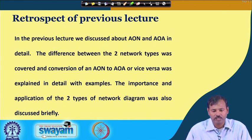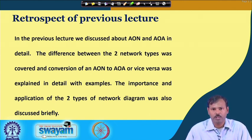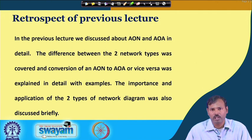In the last class we discussed how dummy jobs are required in the activity-on-arrow diagram to help identify which are the predecessor and successor jobs for a particular job. Activity-on-node diagrams are much easier, where jobs are identified in the nodes and predecessors and successors can be easily connected with arrows from one node to another. In the arrow diagram, nodes only show the initiating and terminating points, and arrows depict the jobs.